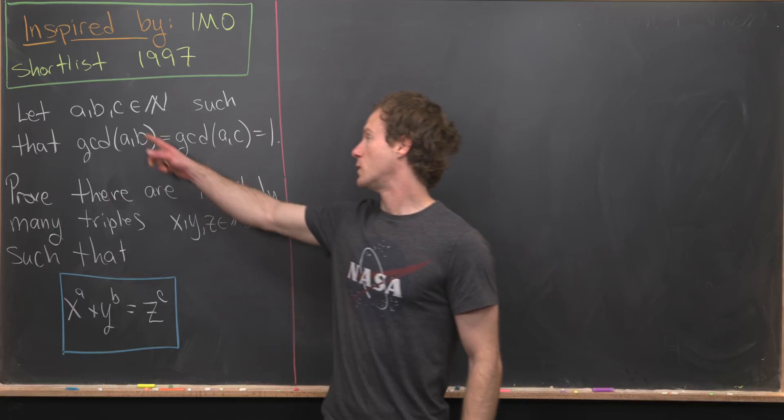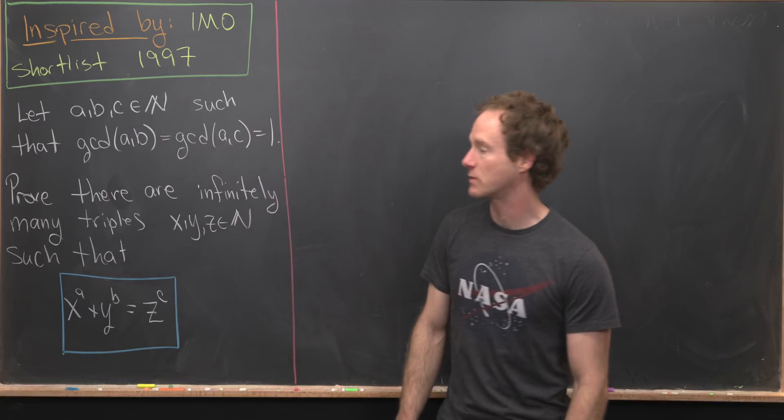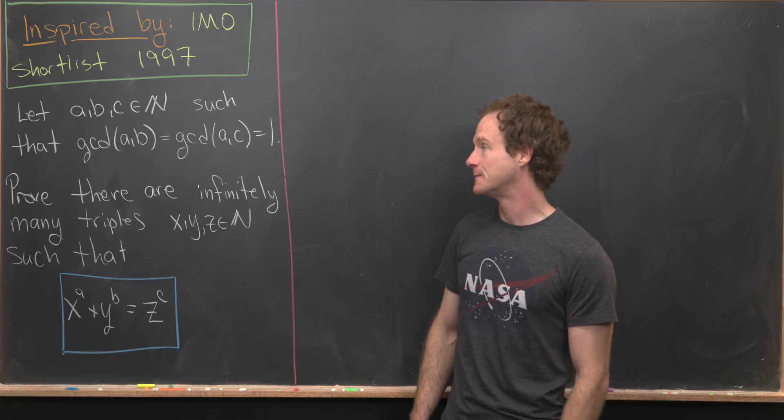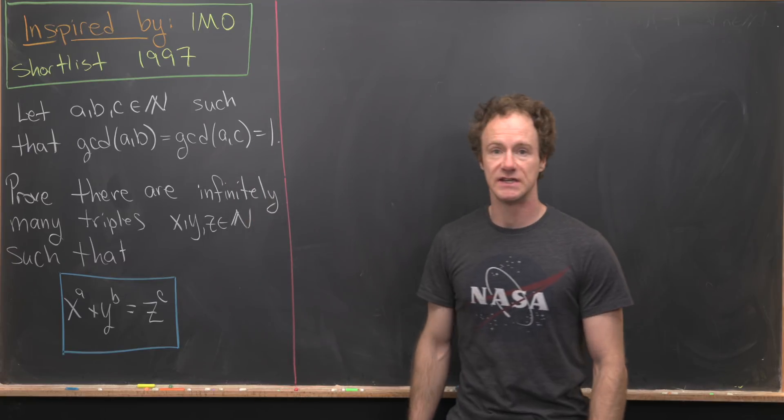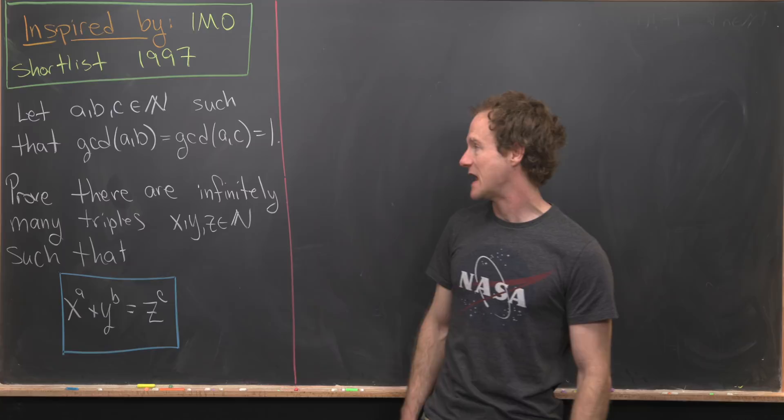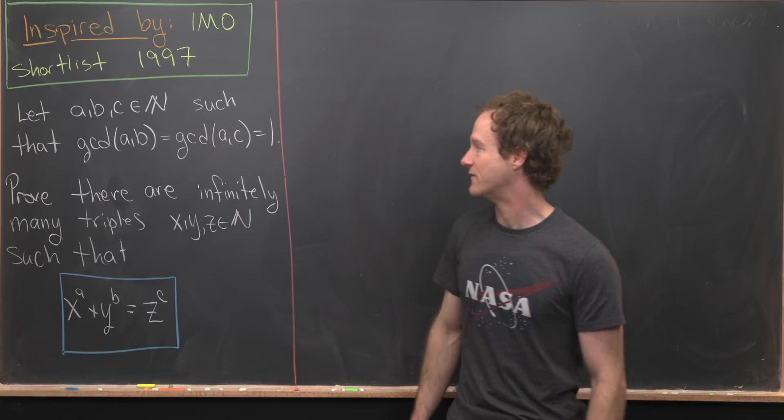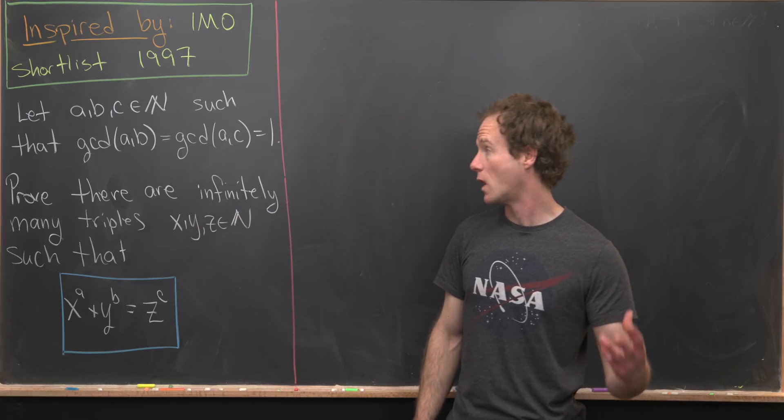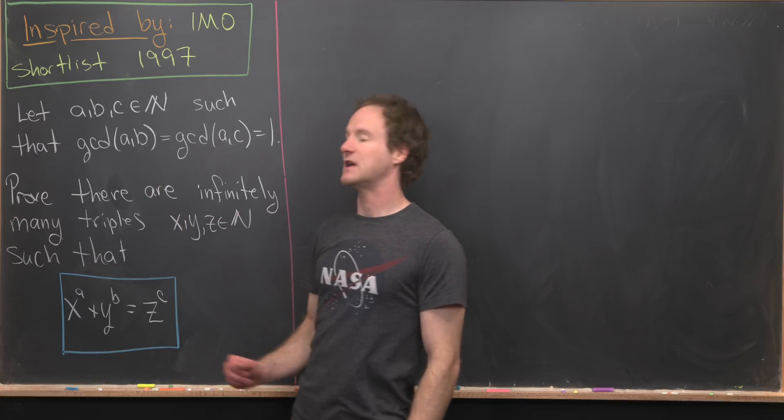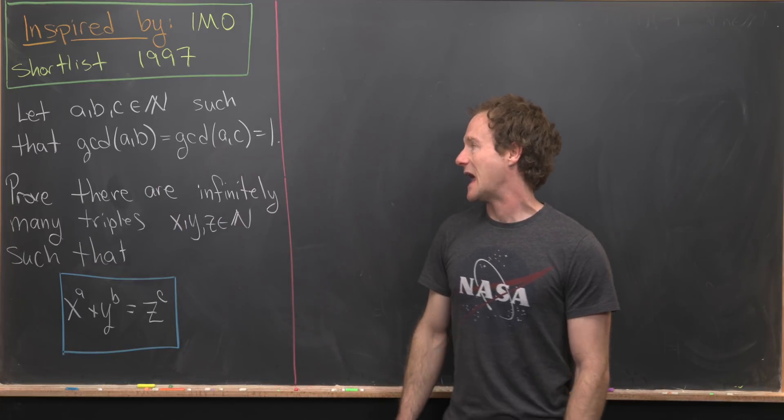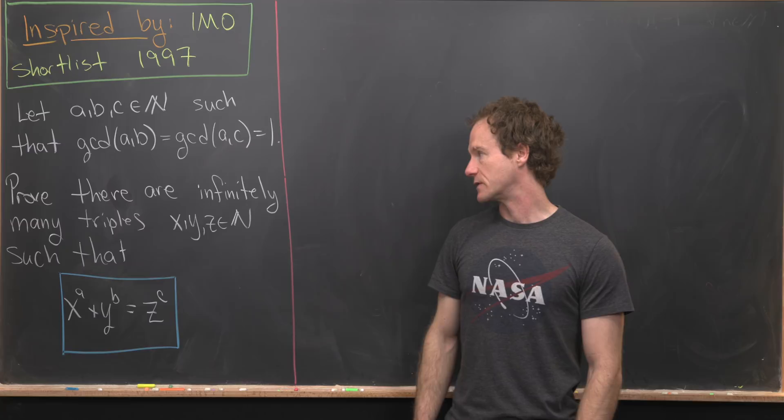So here's the setup. We want to have natural numbers A, B, and C satisfying the following condition: GCD of A and B is equal to GCD of A with C, which is equal to 1. So in other words, A and B are relatively prime, and A and C are also relatively prime.